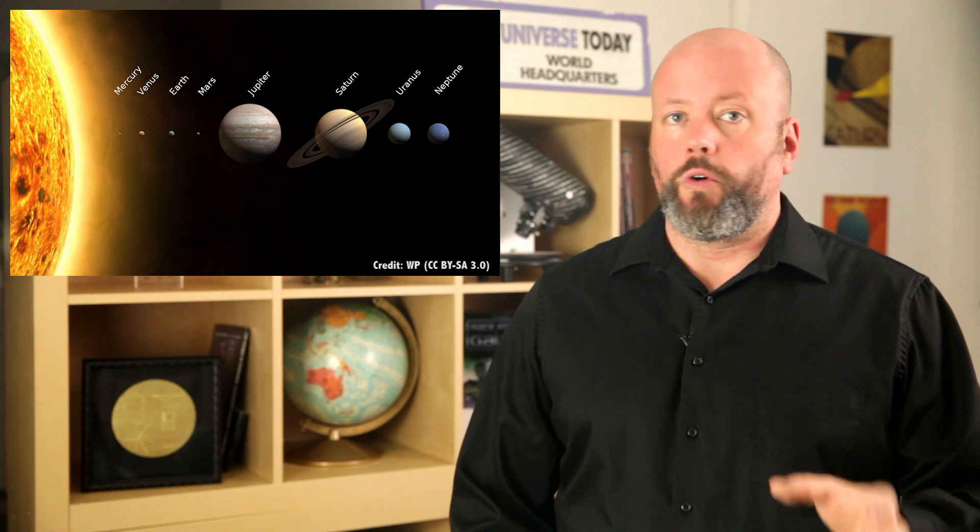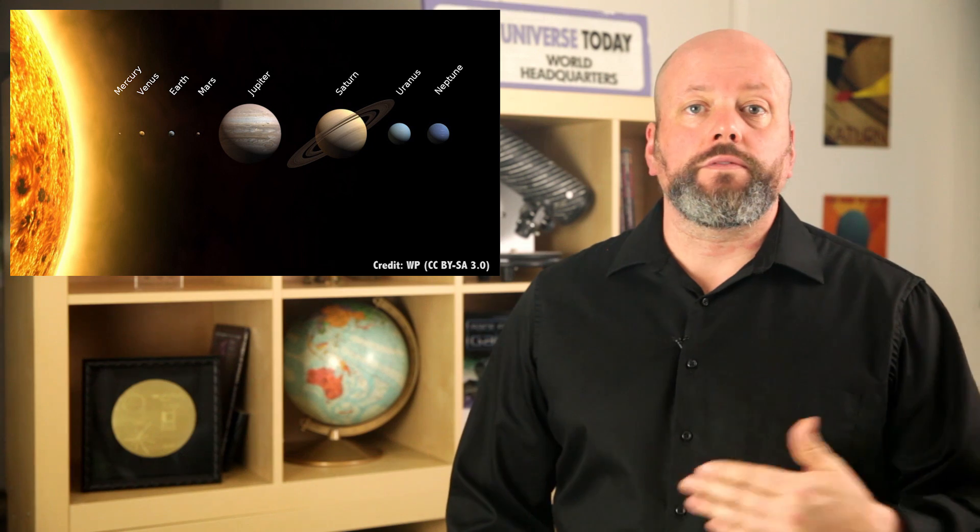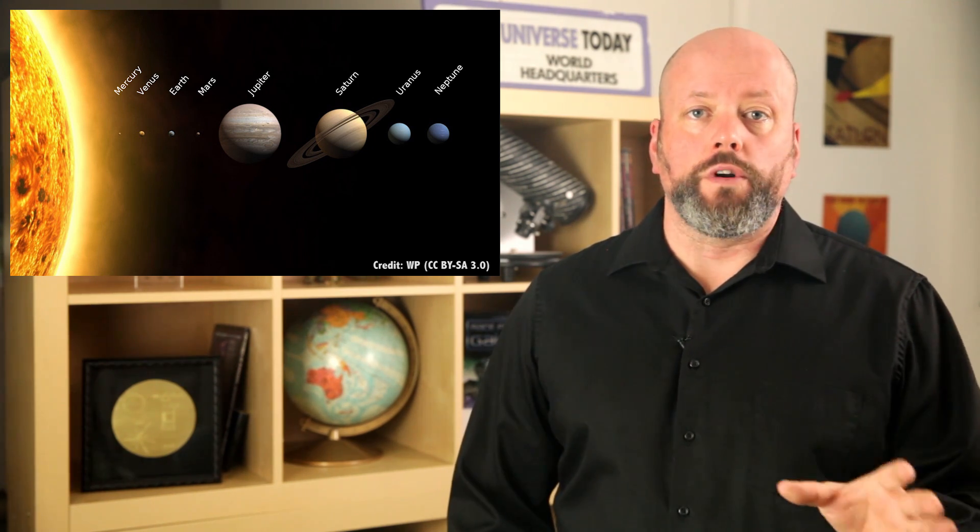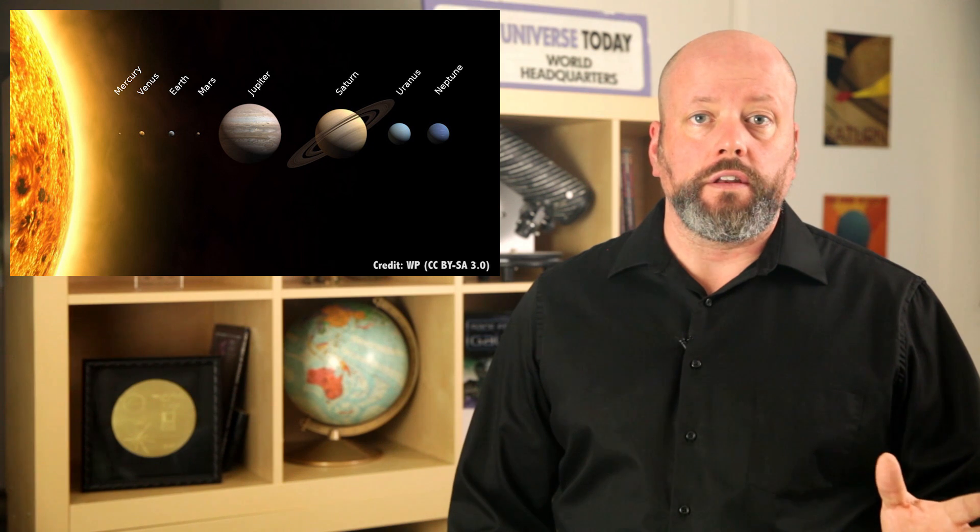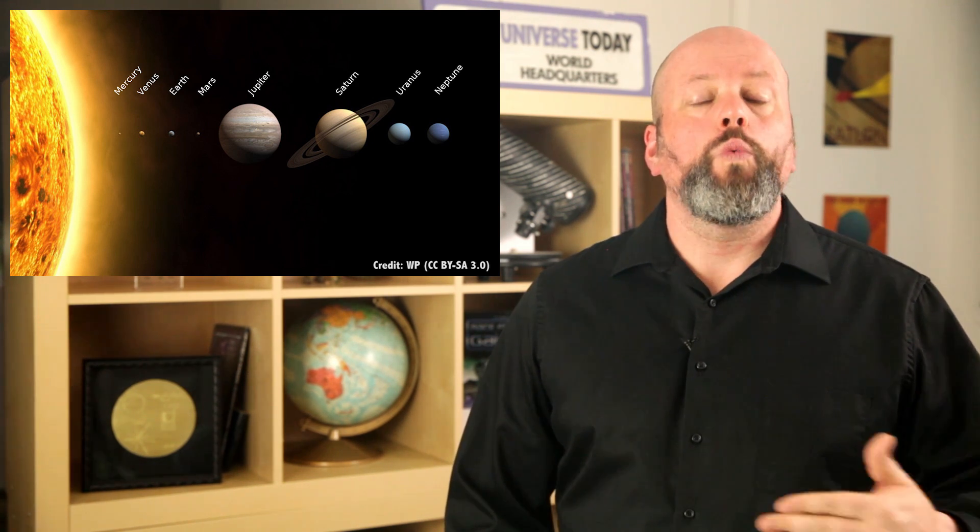Each of the planets orbit the Sun. Mercury and Venus orbit closer to the Sun than Earth, than the rest of the planets. When we observe Venus, we look inwards, down, towards the Sun. When we see the rest of the planets, we're looking outward, away from the Sun.